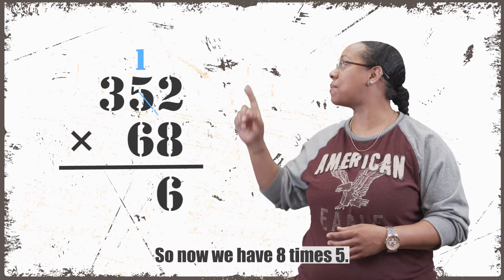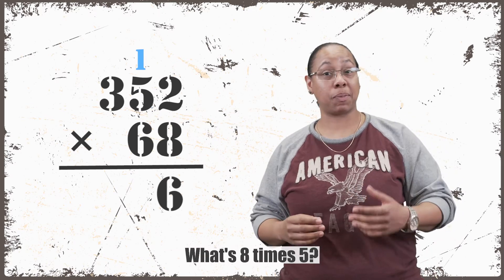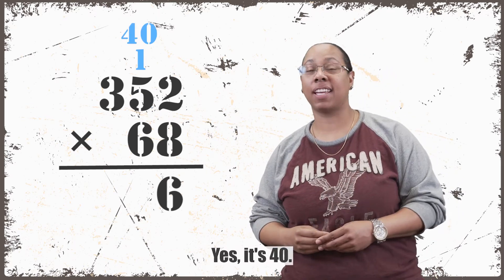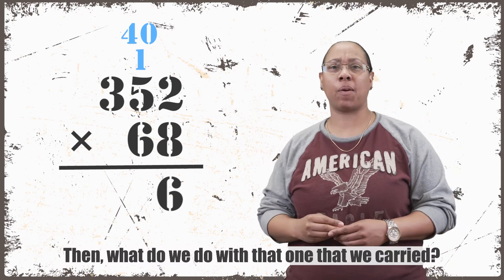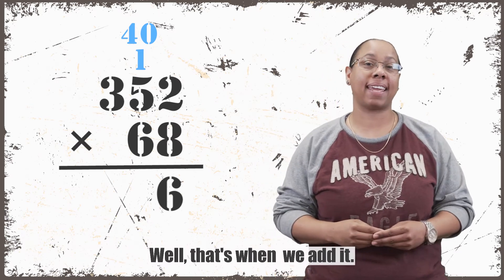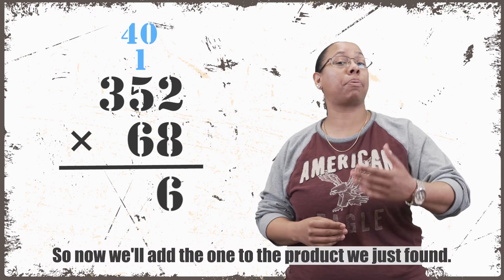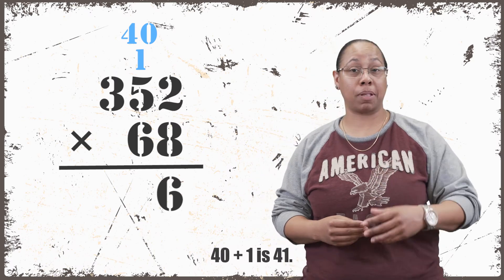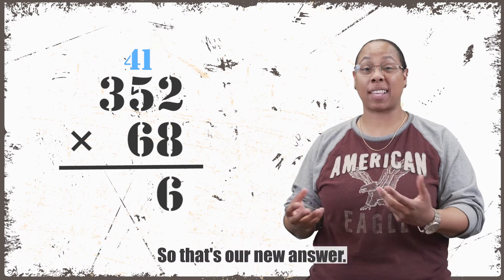We continue multiplying across with the 8. So now we have 8 times 5. Well, what's 8 times 5? Yes, it's 40. Then what do we do with that 1 that we carried? That's when we add it. So now we'll add the 1 to the product we just found. 40 plus 1 is 41. So that's our new answer.